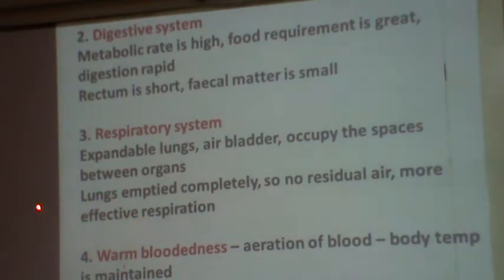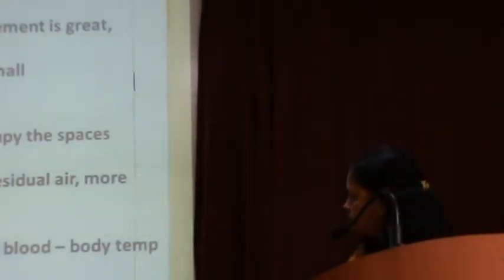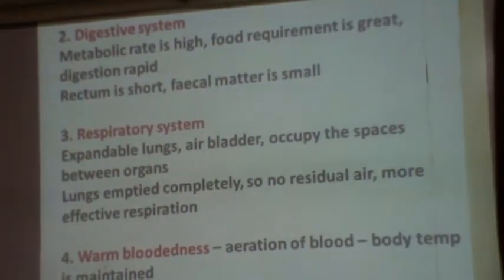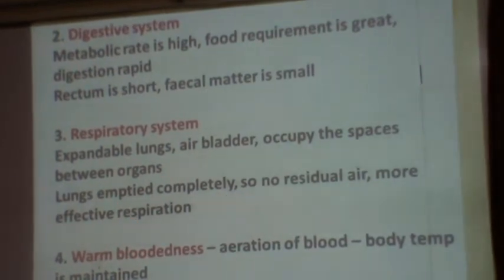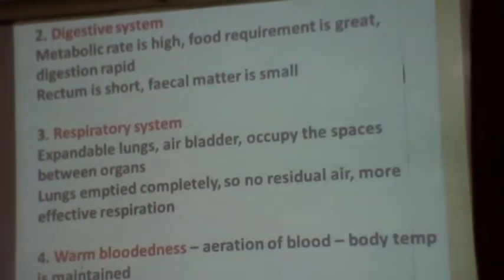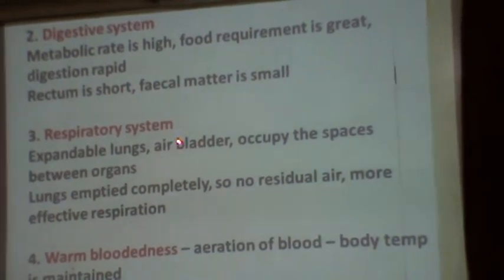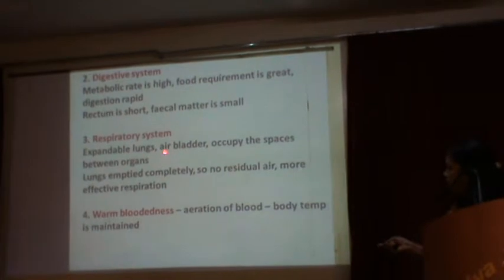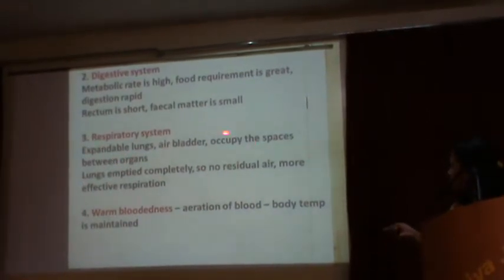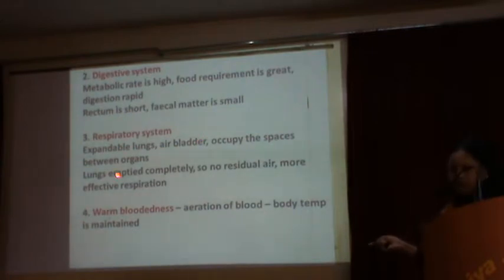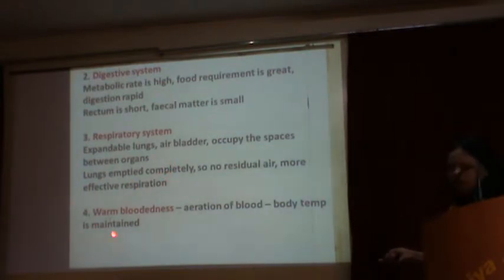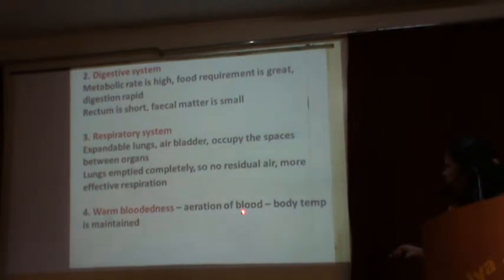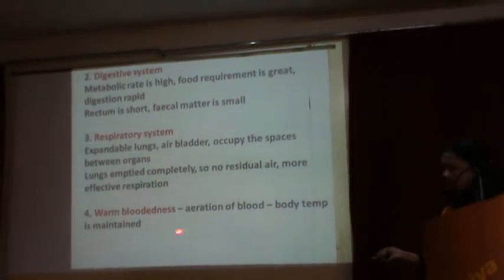In the respiratory system, birds have spongy, expandable lungs that are larger in size. Besides the lungs, 5 air bladders are also present in the bird, also filled with air. This makes the body lightweight, and the air bladders supply fresh oxygen to the body. The lungs and air bladders are situated at the dorsal side. Birds and mammals are warm-blooded — they maintain their body temperature and are homeotherms.